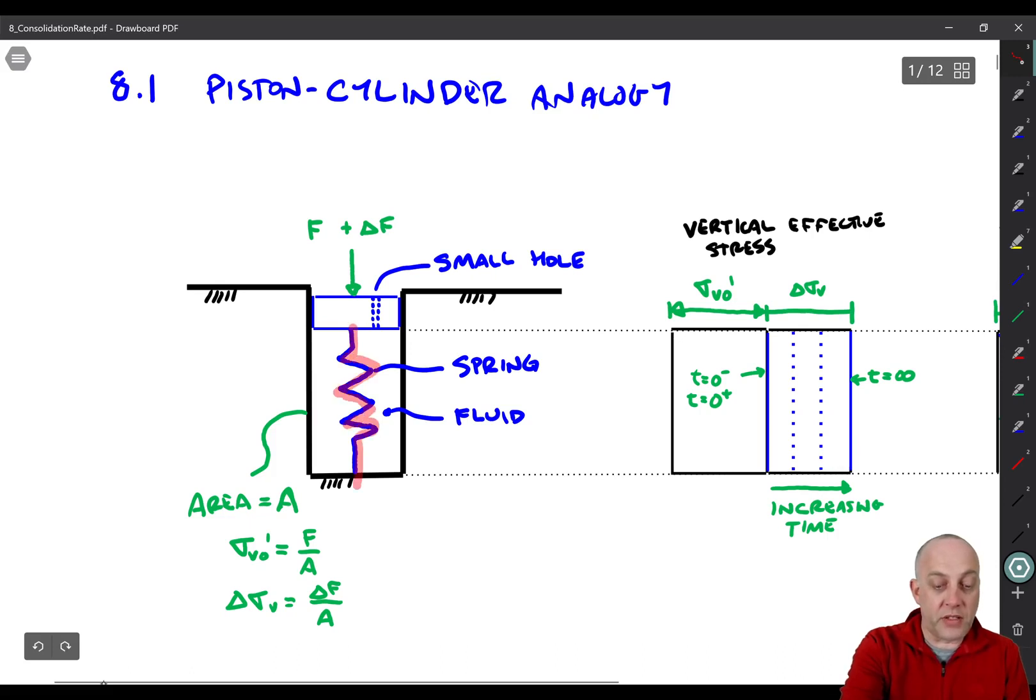That we've loaded the cylinder up and it's had plenty of time to come into equilibrium but all the water has already leaked out of the small hole from the previous loading stage. Then we're going to add an additional load, so delta sigma V is delta F divided by A.